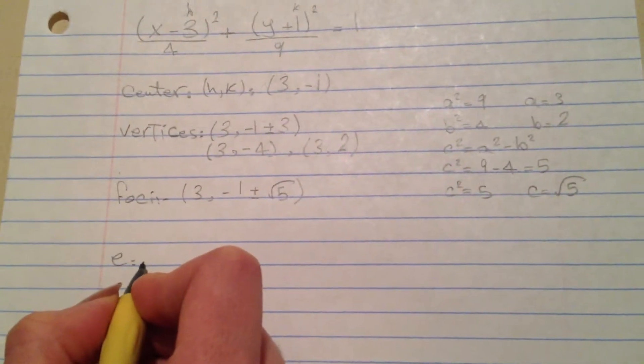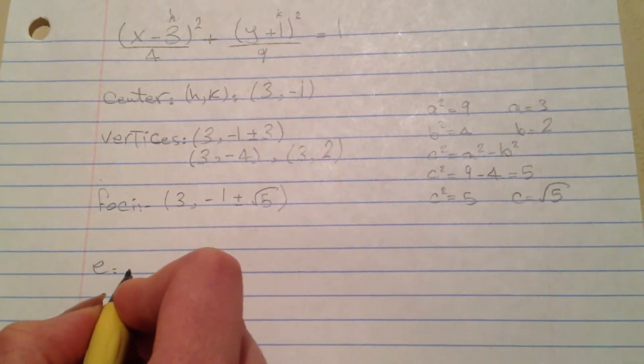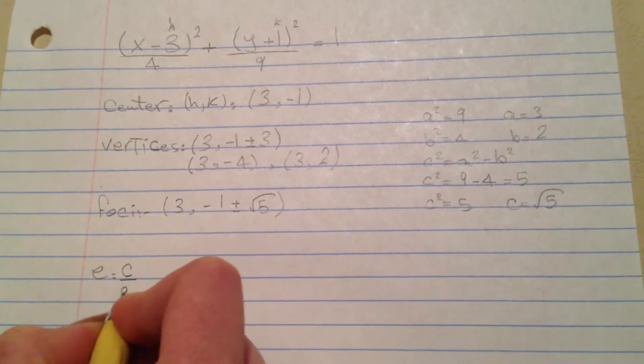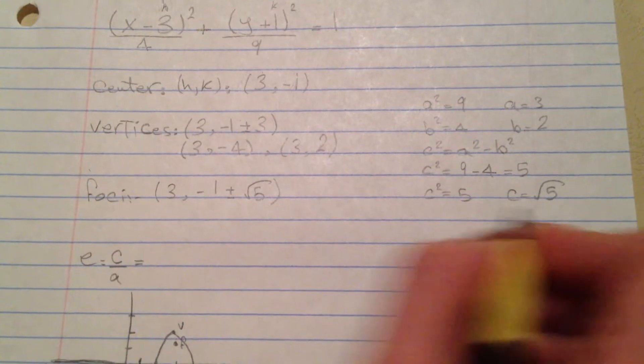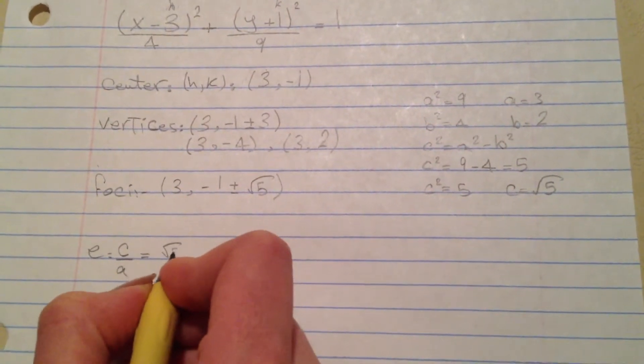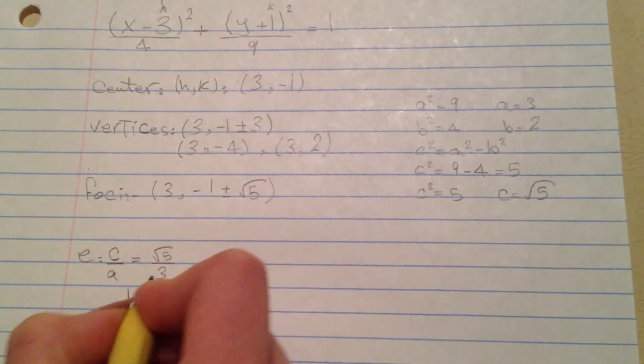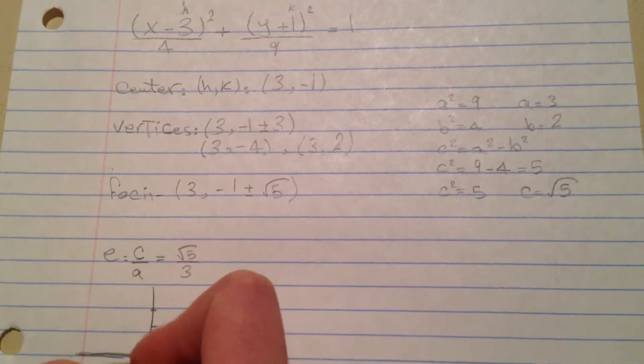And then to find the eccentricity it is c over a. So we have our c is square root of 5 divided by 3. Now we have to graph the equation.